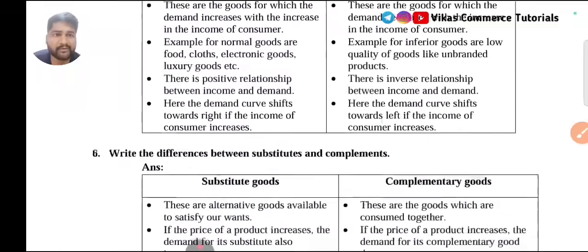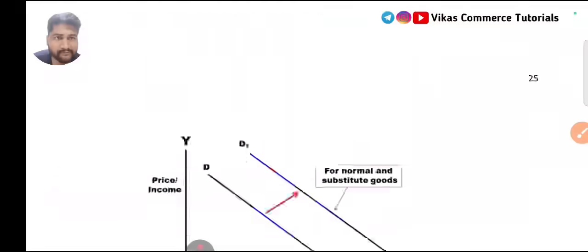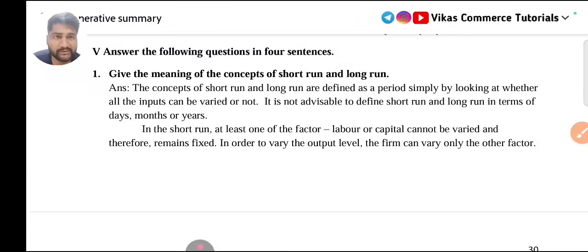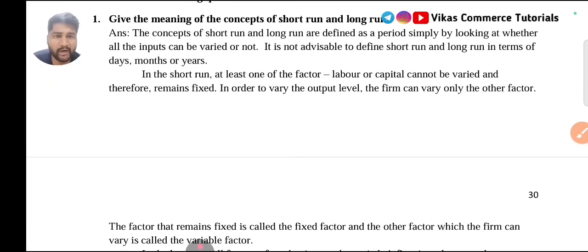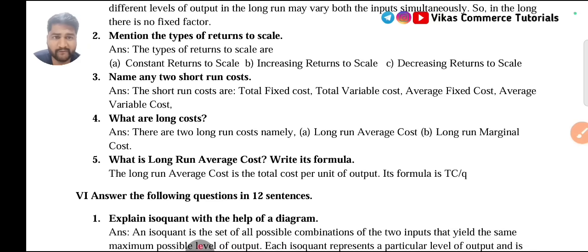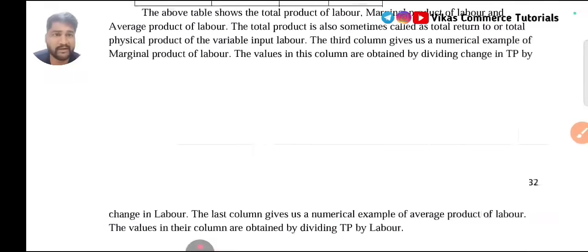Coming to Chapter 3, Production and Cost. Looking at the two-mark important questions here: types of returns to scale are already mentioned in the four-marks category. Short-run costs are already mentioned in the six-marks category, and long-run costs are mentioned in the four-marks category. Wherever questions are mentioned in four and six marks, those are not required for two marks. So from Chapter 3, I don't think any questions are specifically important for two marks, since short-run cost, long-run cost, and returns to scale are already covered in higher categories.